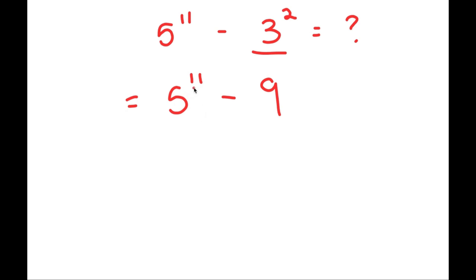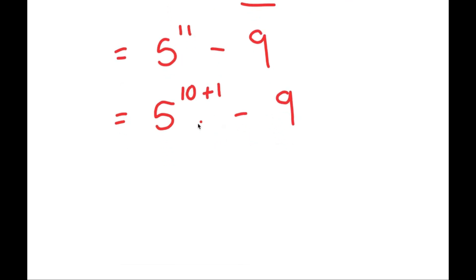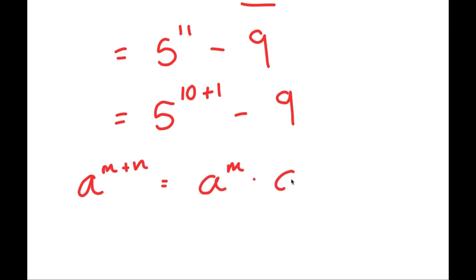From here, I'm going to write 5 to the power of 11 as 5 to the power of 10 plus 1. This way, I can use the property: a to the power of m plus n is equal to a to the power of m times a to the power of n. So this turns into 5 to the power of 10 times 5 to the power of 1, minus 9.